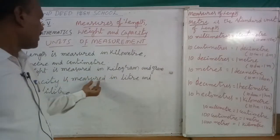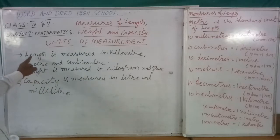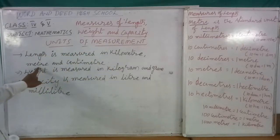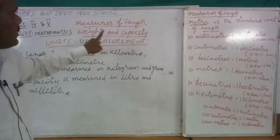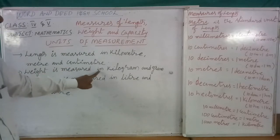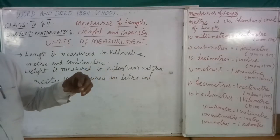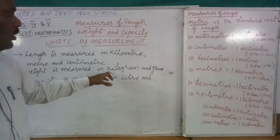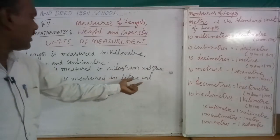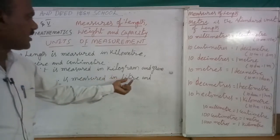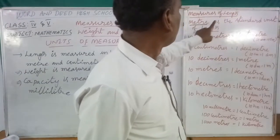So length is measured in kilometers, meters, and centimeters. The second point is weight — weight is measured in kilograms and grams, as you know from kirana shops. The third point is capacity, which is measured in liters and milliliters.